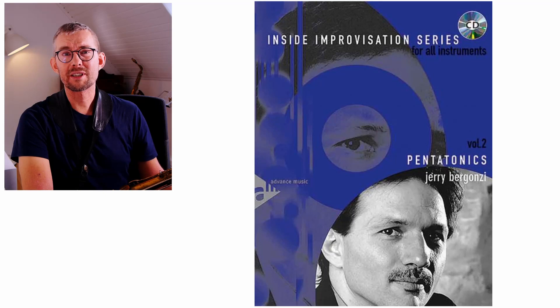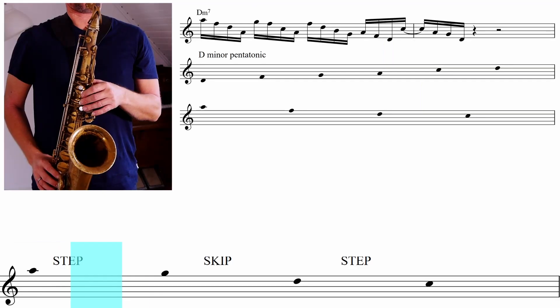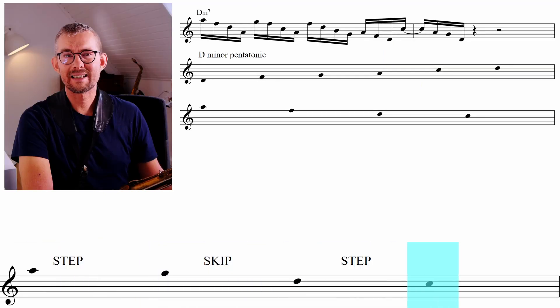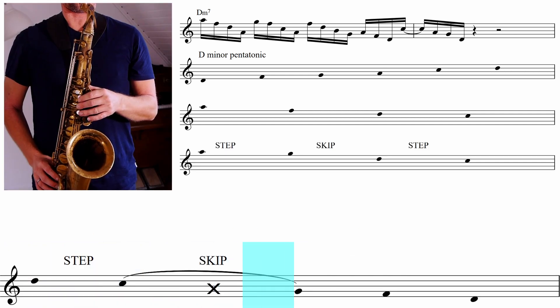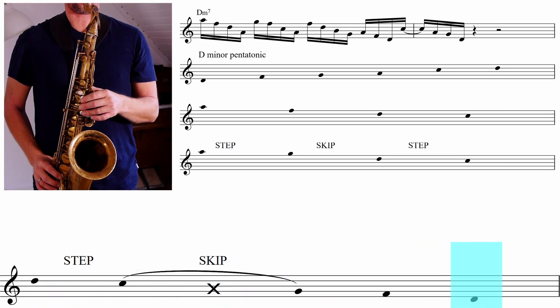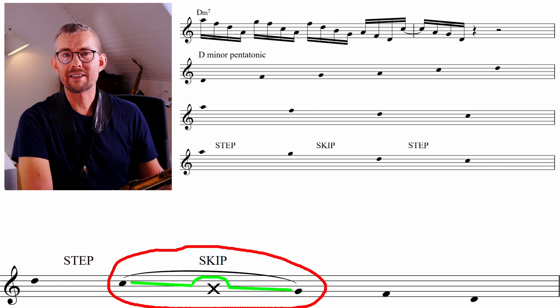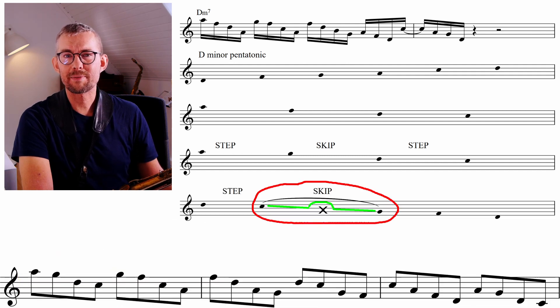I've checked one of Bergonzi's books and there's all the patterns in. Step skip step, where the steps are just scale movement and the skips are skipping one note of the scale, jumping to the next one. The step skip step pattern would look like this down the D minor pentatonic scale.